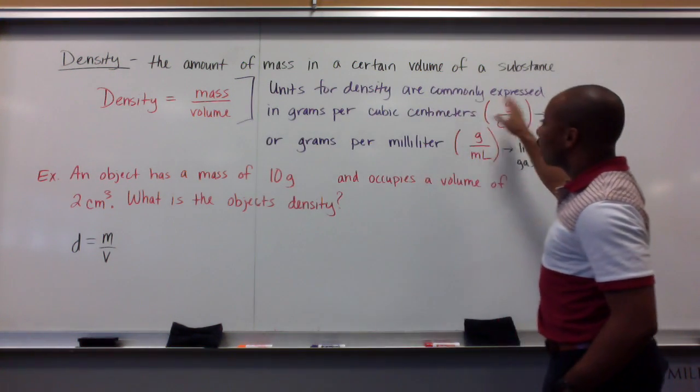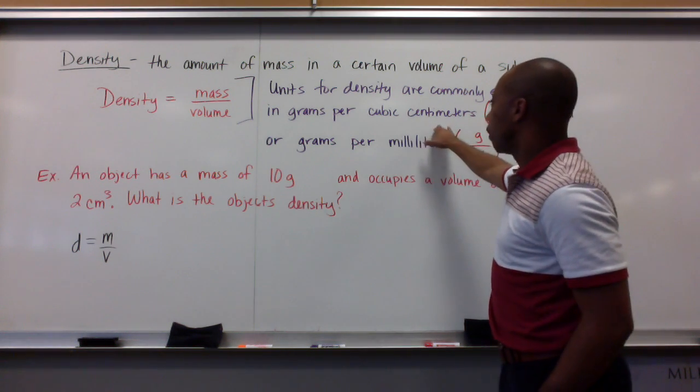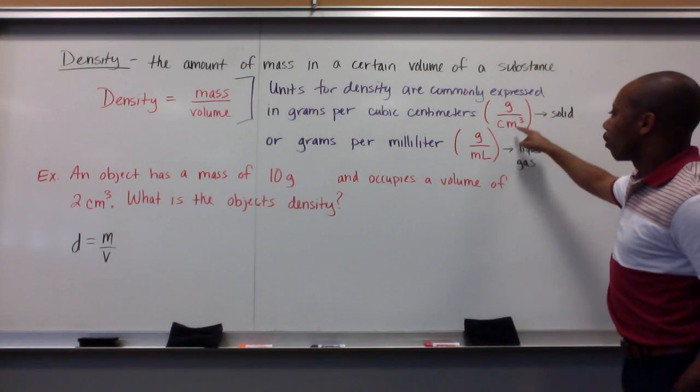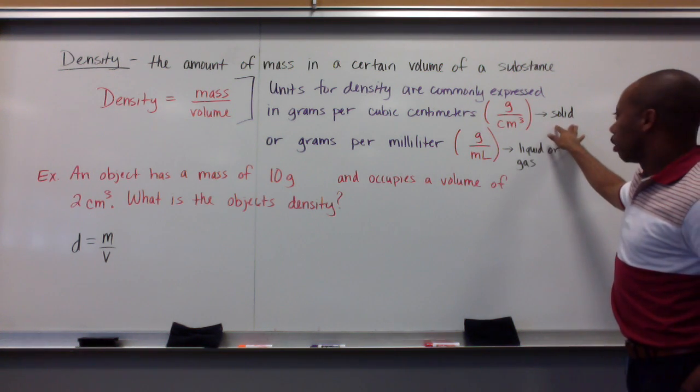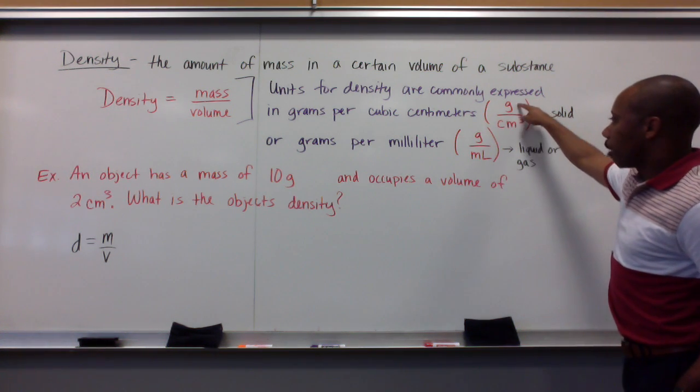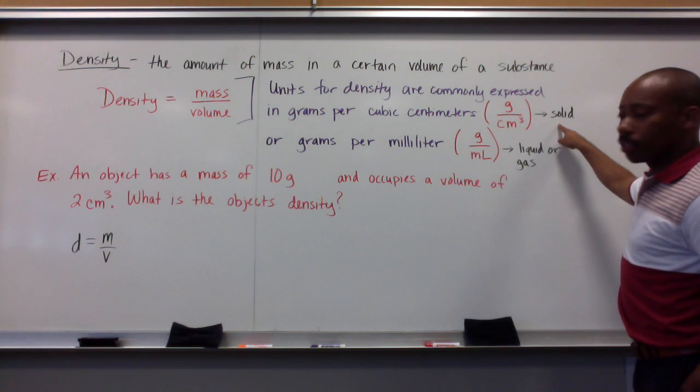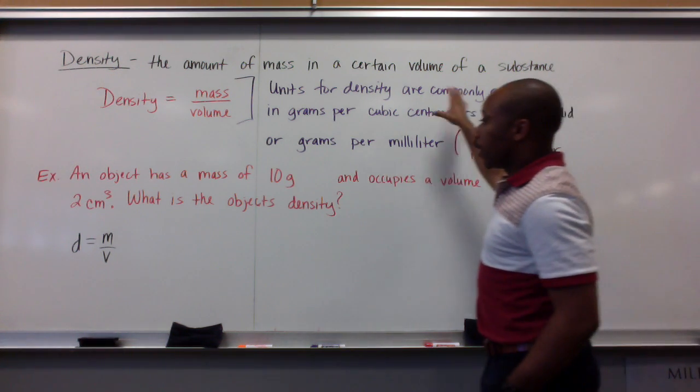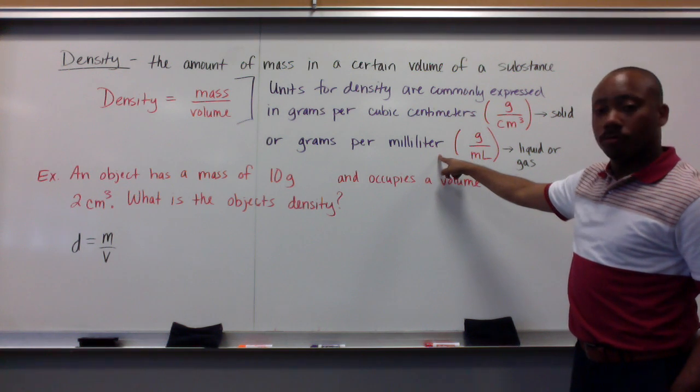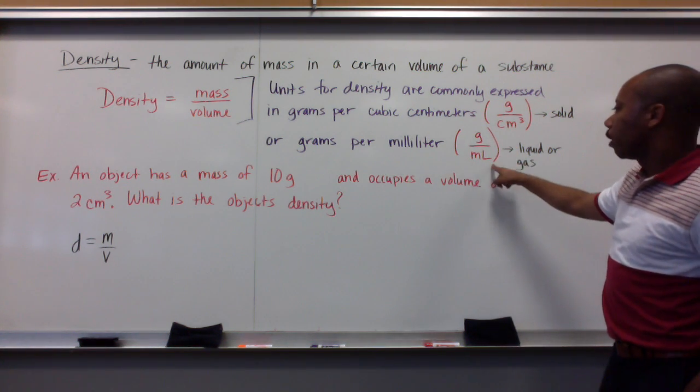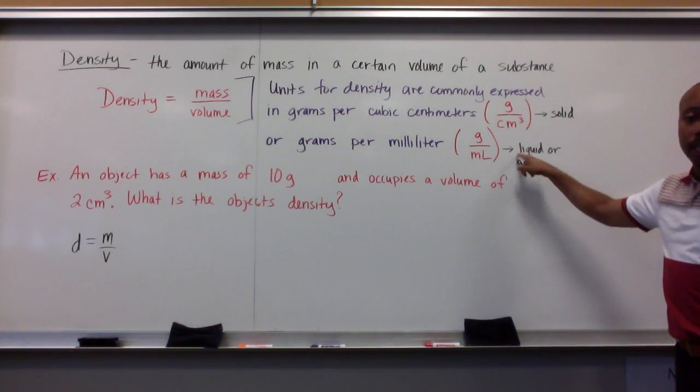The units for density are commonly expressed in grams per cubic centimeter, which is g over cubic centimeters. And this is the density of a solid. When the units are grams per cubic centimeter, you're representing a solid. And other units of density are grams per milliliter. That's grams over milliliters. This is the density of a liquid or a gas.